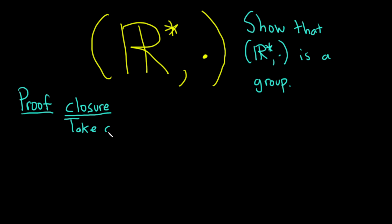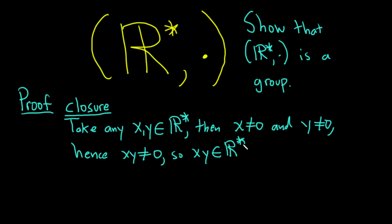Take any x and y in this set here, the set of non-zero real numbers. Then x is not zero and y is not zero. Hence, the product is not zero. So xy is a non-zero real number. It's in this set.